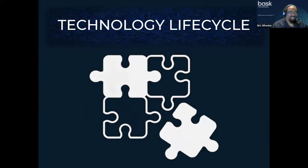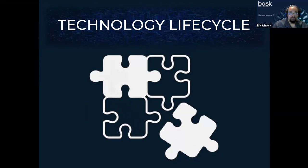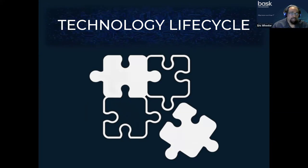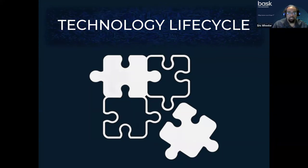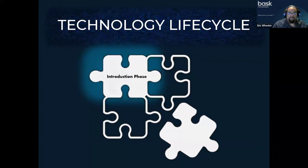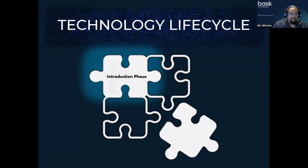So when we're talking about the technology lifecycle, we're talking about the phenomenon that exists everywhere else in the world — all things that live, die, and go through different phases as they move through that cycle. Technology is no different. We break down the technology lifecycle into four different phases: the introduction phase, the growth phase, maturity, and then decline. Starting with the introduction phase — this is where the technology lifecycle begins. It's when a new technology or product is introduced to the market, characterized by high innovation and rapid advancements. Companies are adopting these new technologies during this phase to gain a competitive edge.